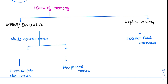The basic difference between these two is that in explicit memory, we need consciousness — you need to be aware and take decisions, your brain needs to be active. Whereas in implicit memory, it does not need awareness. It is done at a subconscious level — it needs very little awareness.